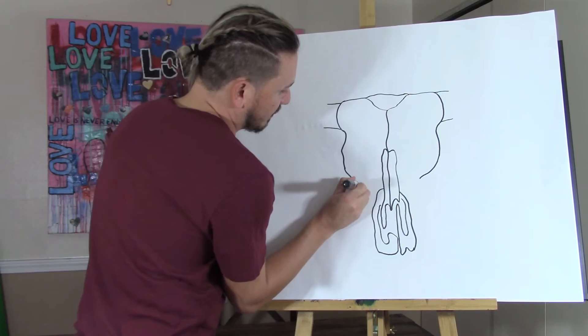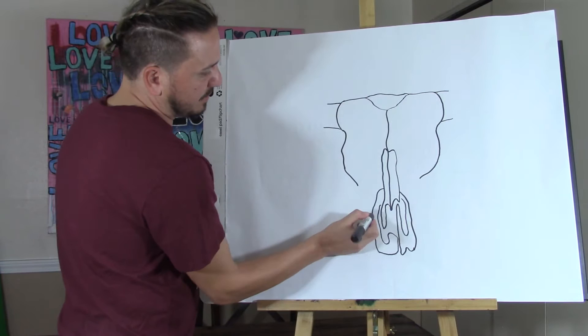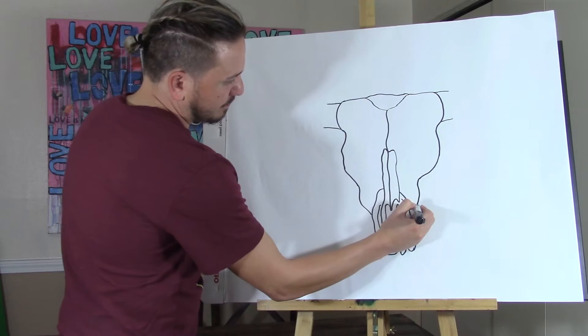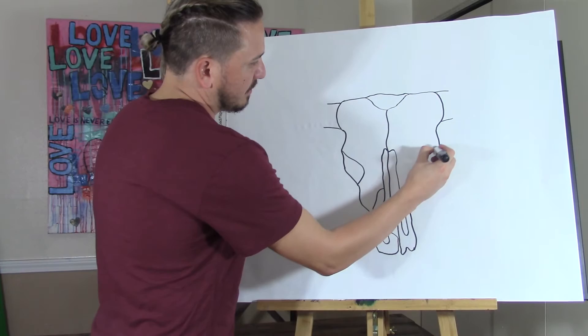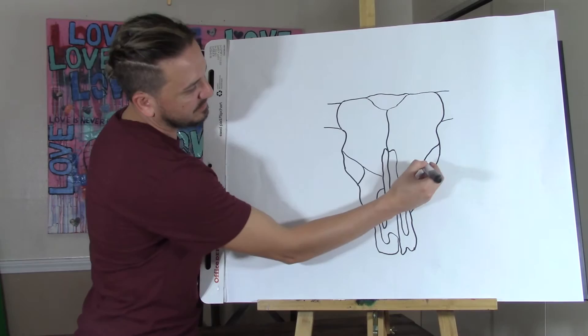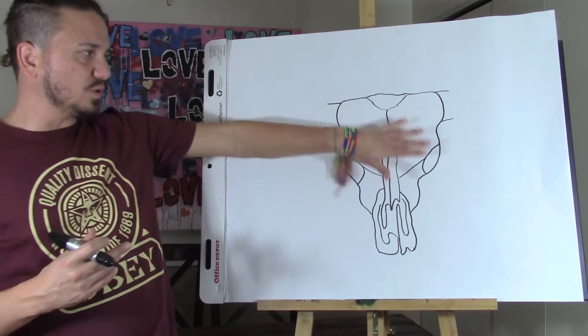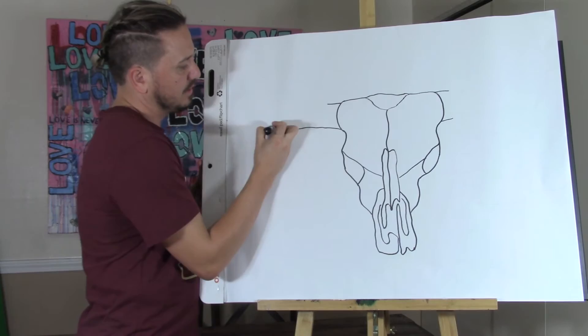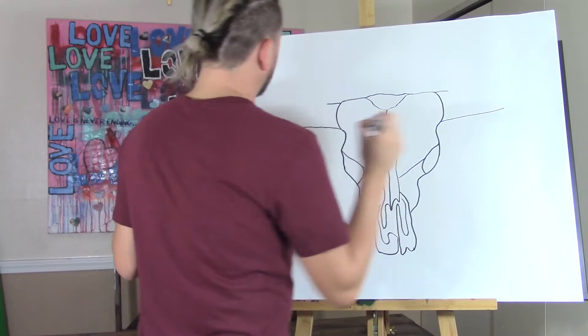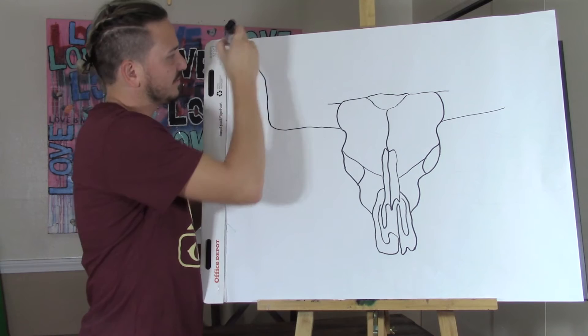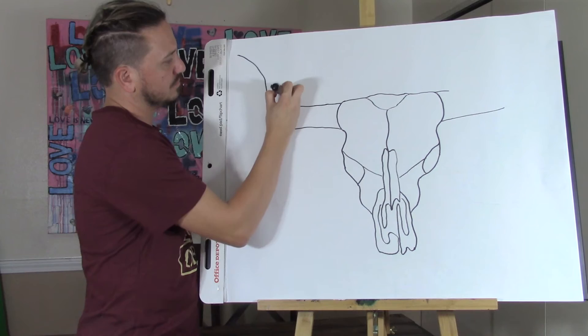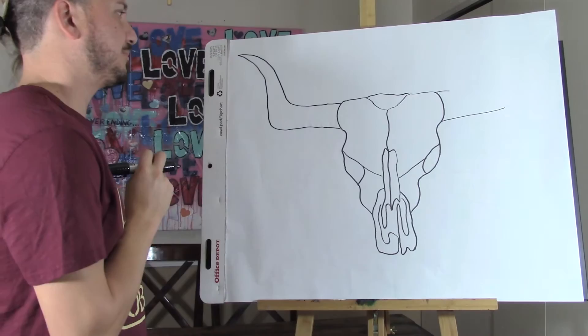So just keep bringing this in on both sides until you reach this part of the skull. Now we're gonna make the sockets — like where the eyes would be — so there would be one on this side and then one on the other side. And then you bring another line from the eye to the center of the skull. So there we have the actual skull. Now we just need the horns — extend this out on both sides. It's not going to be the same size, you know, unless you're really into making sure they're exactly even. There we have one of the horns. Now you do the same thing on the other side.